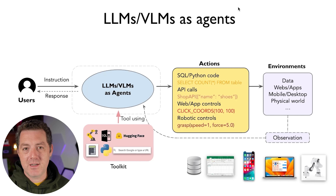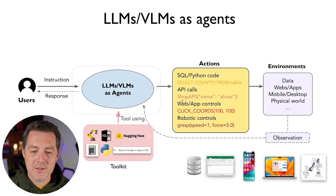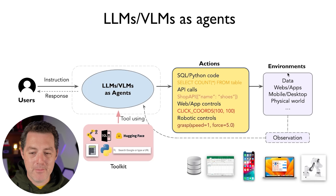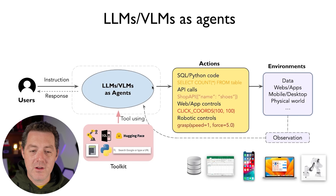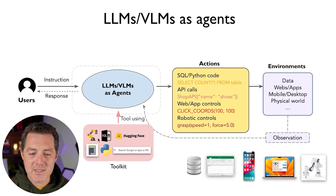Before we get to the solution, the presentation covers what actual agents are. A user gives an instruction, the LLM as an agent is able to code actions — including SQL, API calls, web and app control, and even controlling a robot as an embodied AI. The environment can be Mac OS, Windows, websites, apps, mobile, desktop, or the physical world. The agent then needs to gather observations and feed them back into the LLM, because this is an iterative loop: plan, perform, observe, and iterate again, using tools like Hugging Face, SQL, or Python.